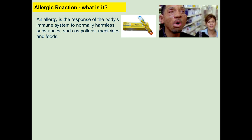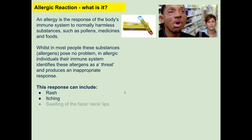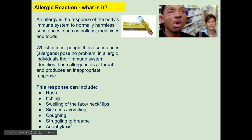Allergic reactions occur where somebody's body has an overreaction to something that would not be an allergen for most people. The immune system identifies the allergen as a threat and produces an inappropriate overreaction, anticipating danger. Responses can include rash, itching, swelling of the face, neck and lips, sickness and vomiting, coughing, difficulty breathing if the airways are swelling, and anaphylaxis in severe cases — in which case they need a shot of adrenaline through an auto-injector.